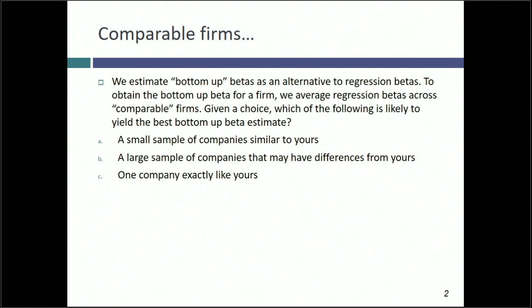I'm going to estimate the beta for Embraer, a Brazilian aerospace company. If I define comparable as other Latin American aerospace companies, I'm in deep trouble — there's only one, it's called Embraer. I can expand to other aerospace companies making small corporate jets, giving me two: Bombardier and Embraer. Or I can define it as aerospace companies in general — Boeing, Airbus, and more — or aerospace and defense, giving me a sample of 25. The question is: should I go narrow or broader?